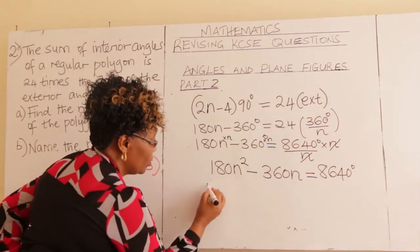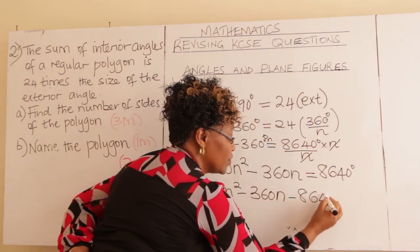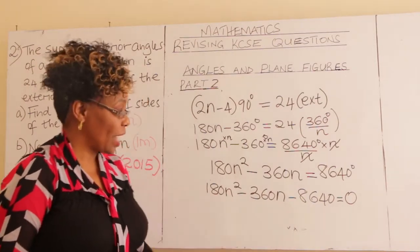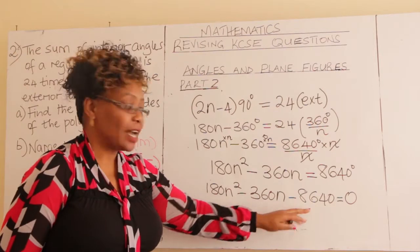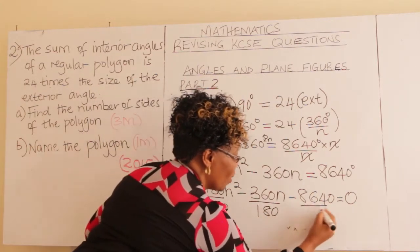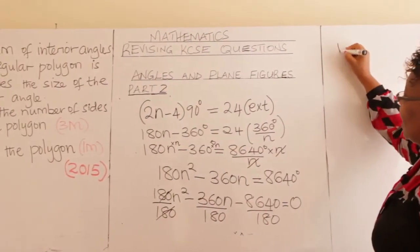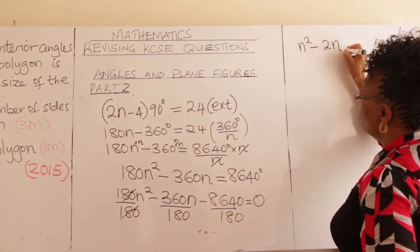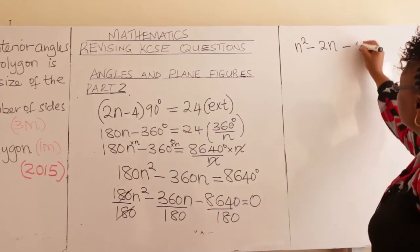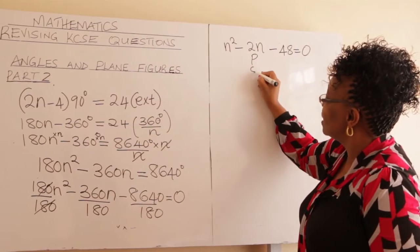Rearranging: 180n² − 360n − 8640 = 0. Divide everything by 180 to simplify: n² − 2n − 48 = 0. This is a quadratic equation — solve it using the factor method. The product is −48 and the sum is −2.